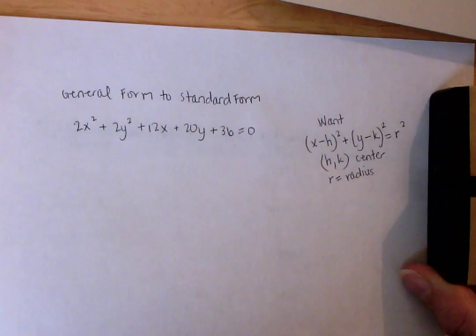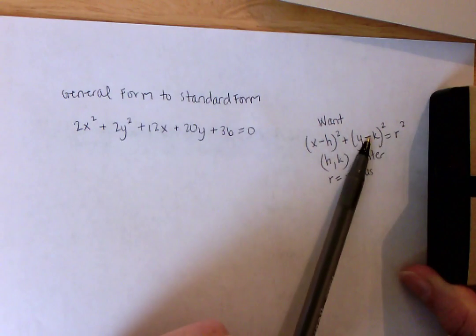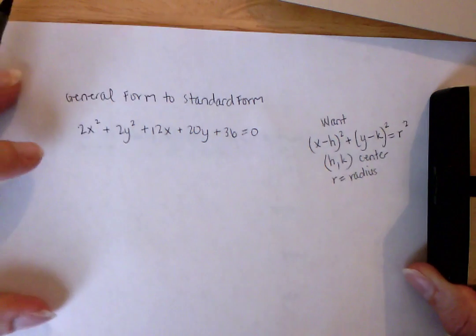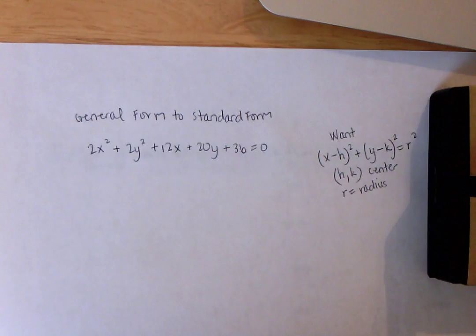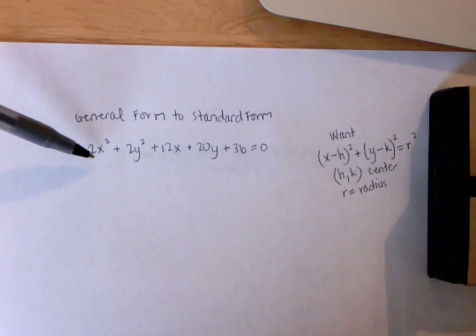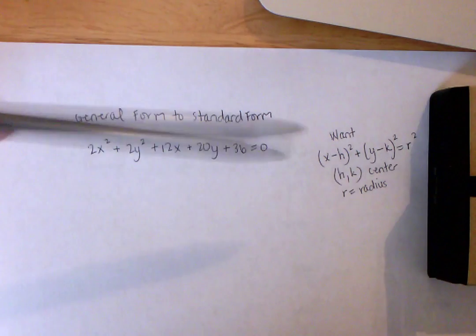Remember we have x minus h squared plus y minus k squared equals r squared, where h,k is our center of our circle and r is the radius. Right now we have this equation here but it's in general form and we want it in standard form, so we have to complete the square for two variables, basically for x's and y's, to get it into this other form.